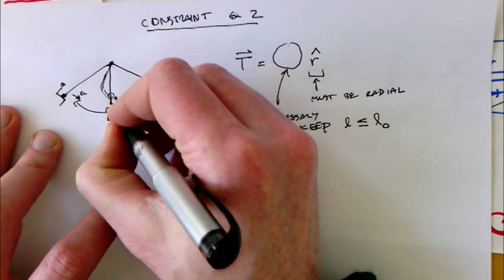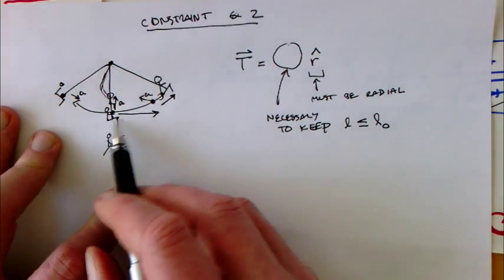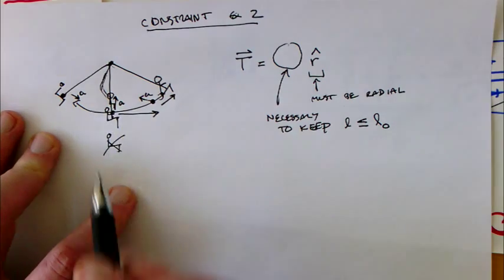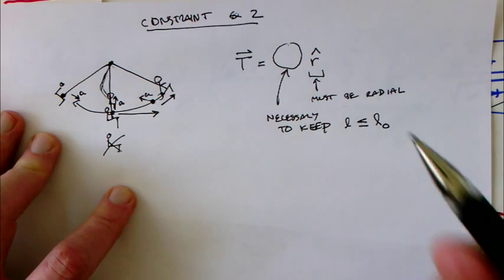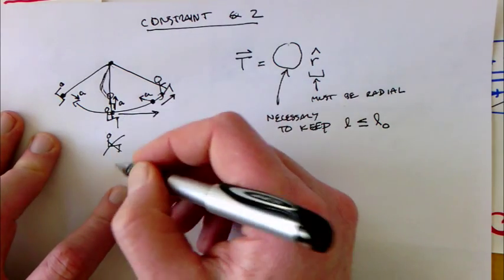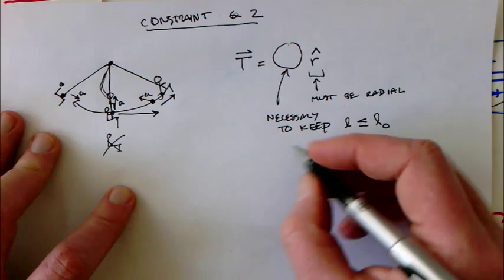Whereas this sort of is an option. That says that the tension is basically allowed to pull up - it's allowed to be in the negative r-hat direction - but it can't actually be in the positive r-hat direction. The rope can't push the kid down.